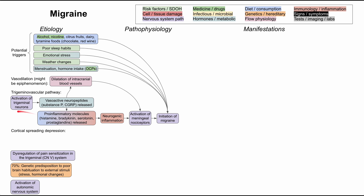These pro-inflammatory molecules cause neurogenic inflammation, which then activates meningeal pain receptors and initiates the migraine. Another pathway is called cortical spreading depression. This is when you have a wave of depolarization in the cerebral cortex, causing a wave of excitation of neuronal activity followed by suppression of neuronal activity. This also triggers the release of pro-inflammatory molecules.